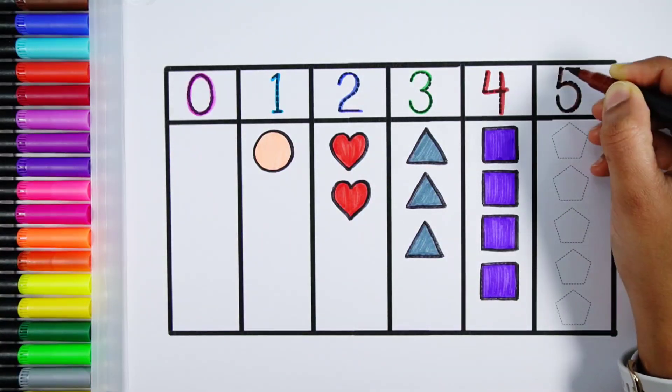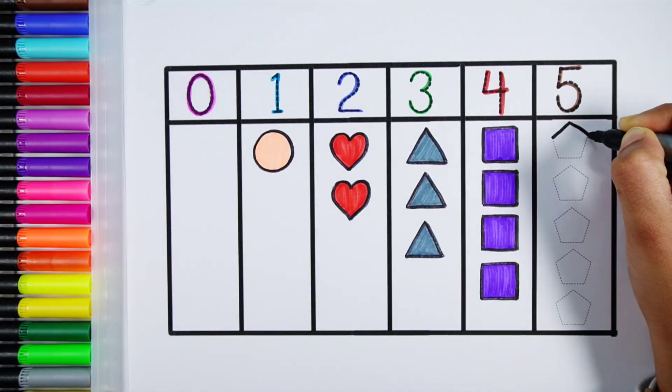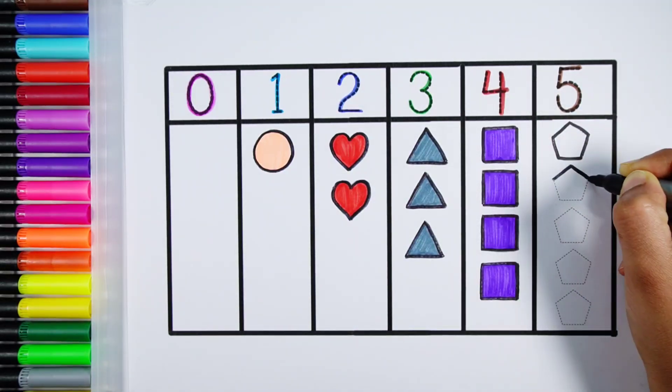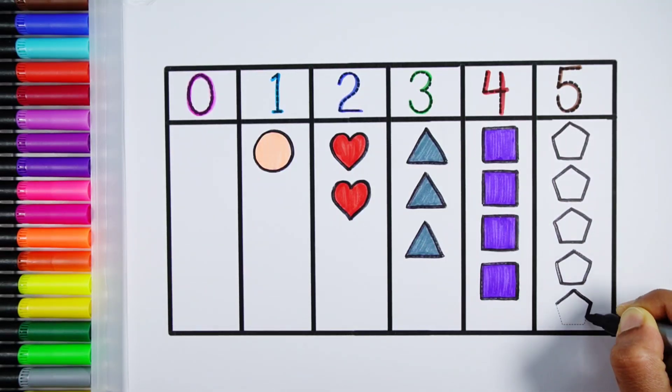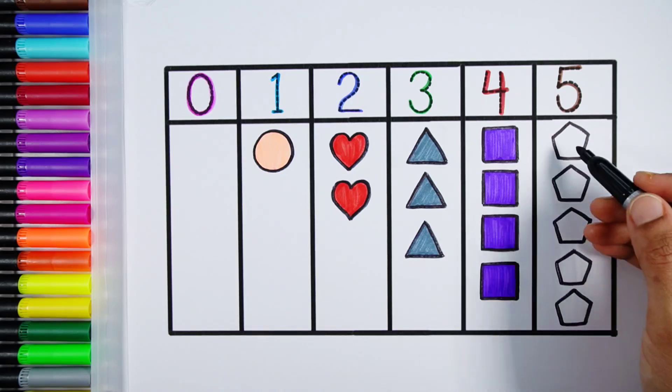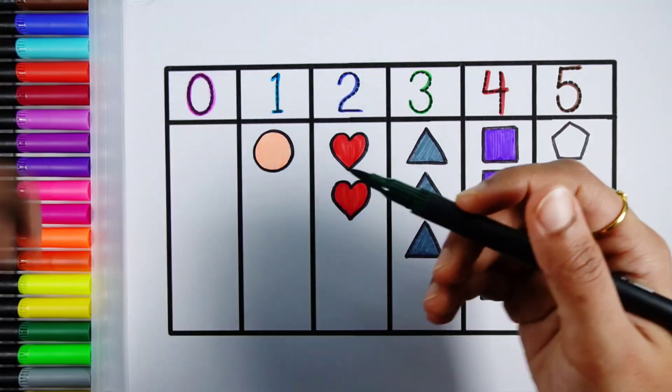Number five. One, two, three, four, five. Five pentagons. Dark green color.